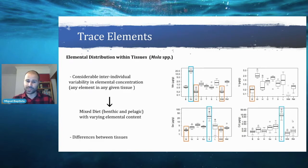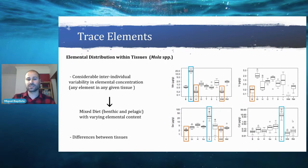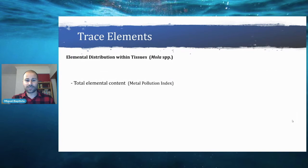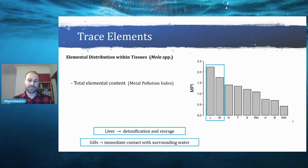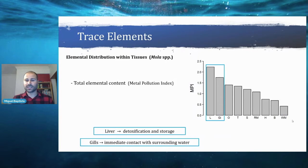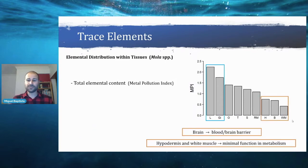We found differences between tissues. For manganese, the gills exhibited the highest concentration, whereas the hypodermis and white muscle exhibited the lowest. Total elemental content was also examined. Tissues exhibiting the highest total trace elements were the liver and the gills — natural results because the liver functions in detoxification and storage, while gills in direct contact with surrounding water accumulate higher elemental levels. Tissues with lowest accumulation were the brain, protected by the blood-brain barrier, and the hypodermis and white muscle, which have minimal metabolic function.